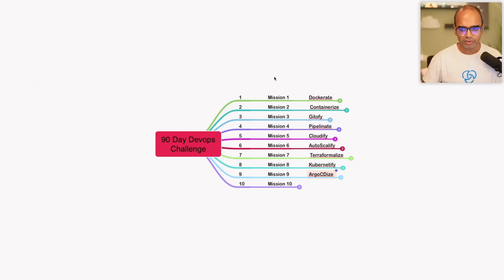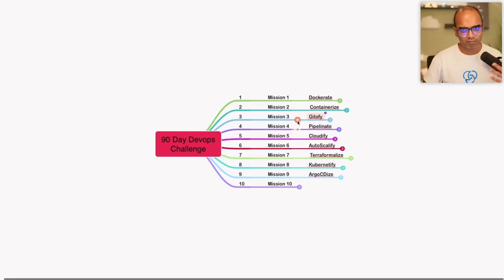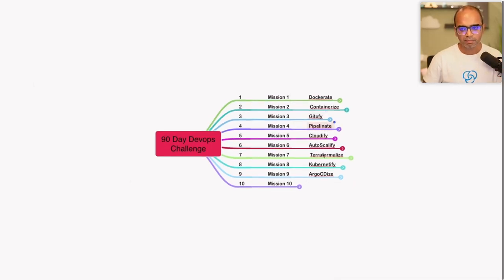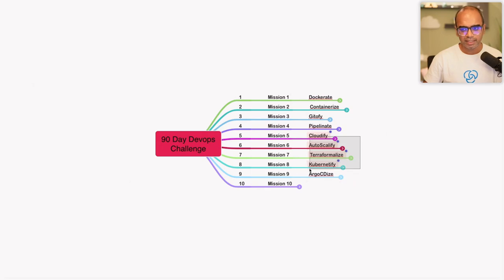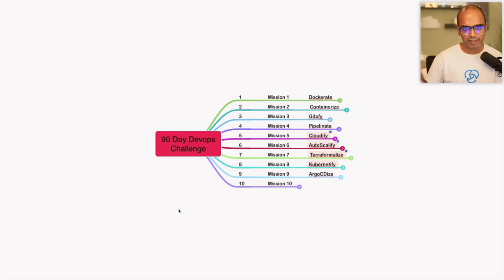Let's recap all the missions we've completed so far. We started with containers for the first two weeks, then talked about branching models and workflows with Git, set up CI pipelines with Jenkins, spent a couple of weeks on cloud, then Terraform, then Kubernetes last week. This week we're back with Argo CD, which is an extension of what Kubernetes offers and helps you set up automated continuous delivery deployment workflows on top of Kubernetes.